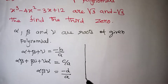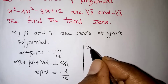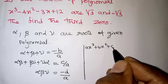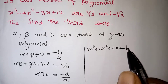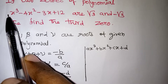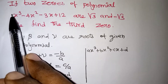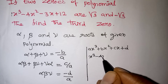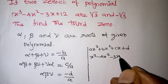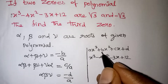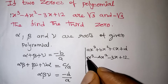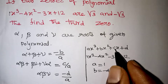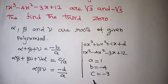The general form of a cubic equation is ax³ + bx² + cx + d. Now look at the equation x³ - 4x² - 3x + 12. The x³ coefficient has nothing given, so we consider it as one. From here: a = 1, b = -4, c = -3, and d = +12.